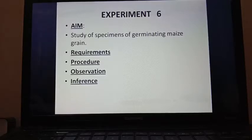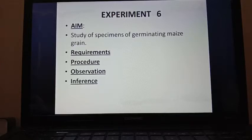The requirements are: specimen of maize grain, razor to cut the grain into two equal halves, petri dish, glass, watch glass, hand lens, and dissecting needle. Next we are going to discuss the procedure.